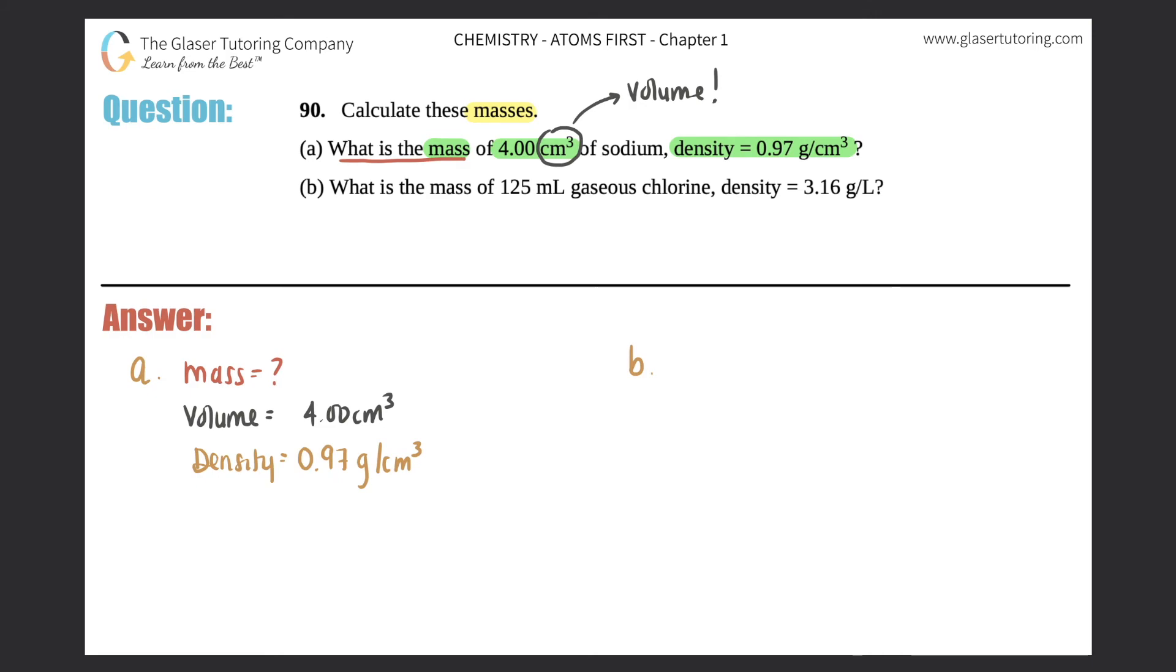Easy as pi, density formula, right? D equals M over V. Just know that the hardest part of this formula is to just match up the units. So the mass units have to match up and the volume units have to match up.